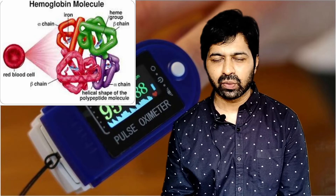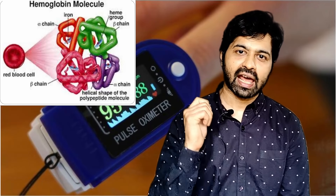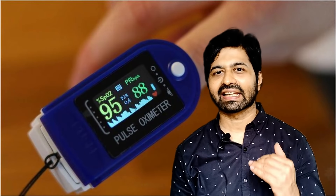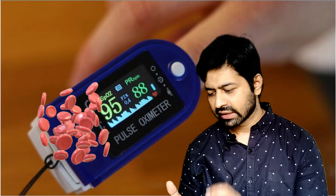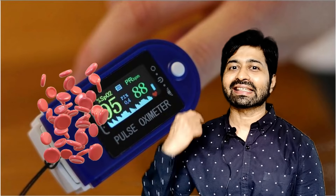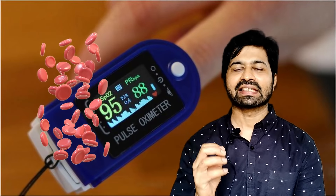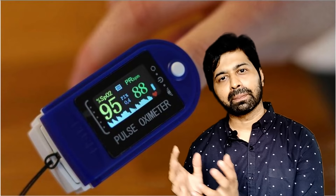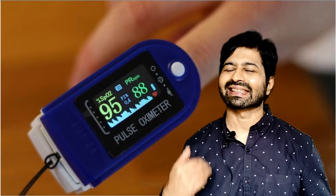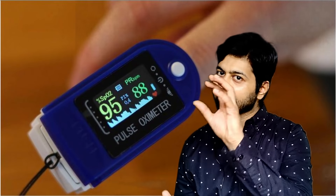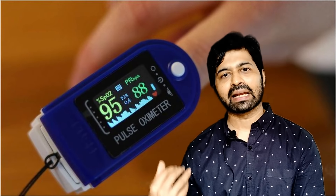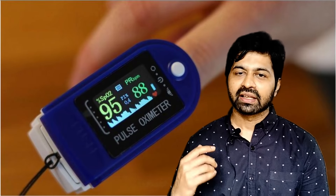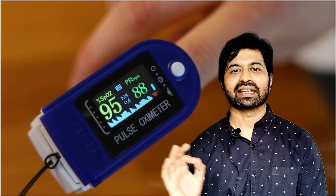Hemoglobin present inside the RBCs in the blood vessels is responsible for carrying oxygen in the blood. Now, what does oxygen saturation mean? In a group of hemoglobin, the fraction that is oxygenated — that is, carrying oxygen — is the oxygen saturation of that blood. For example, if a quantity of blood has 100 hemoglobin molecules and 95 of them are oxygenated while the remaining 5 are deoxygenated, then the oxygen saturation of that blood is 95%.